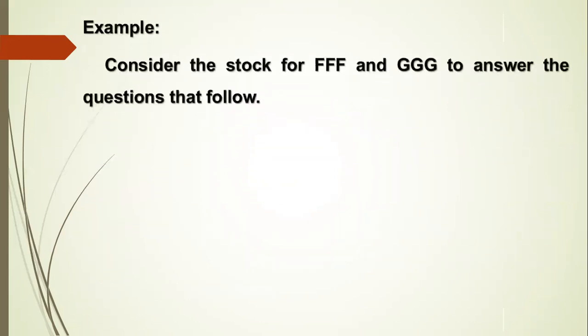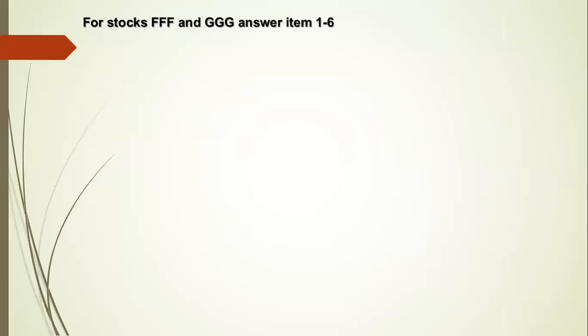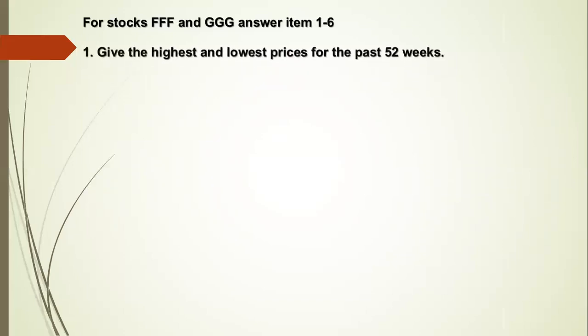Example: Consider the stocks for FFF and GGG to answer the following questions. Number one: give the highest and lowest prices for the past 52 weeks. Number two: give the highest and lowest prices of shares yesterday.